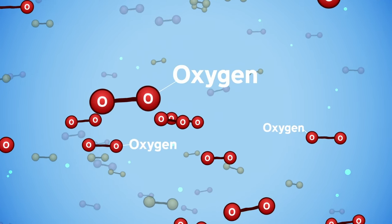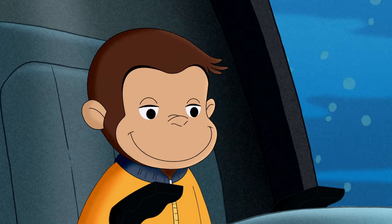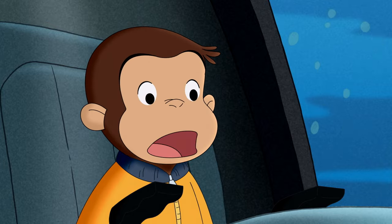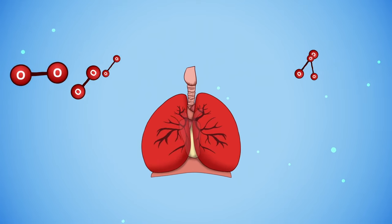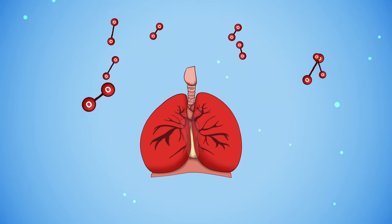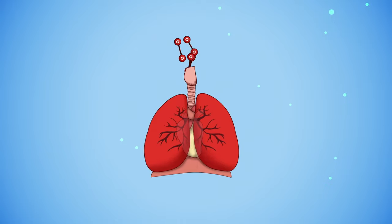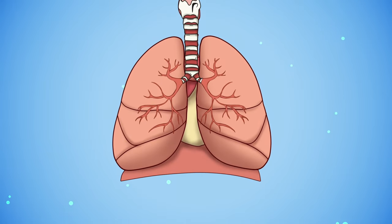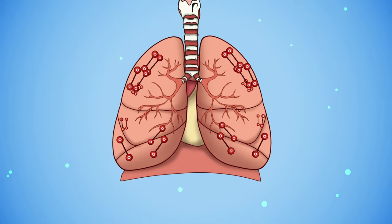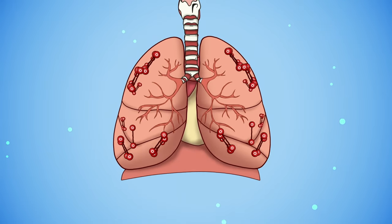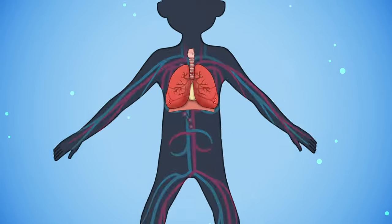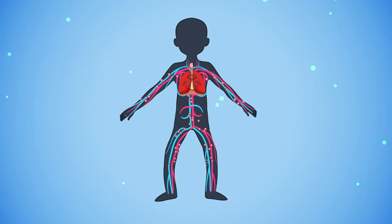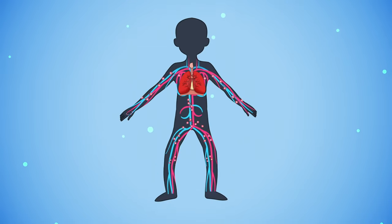When a human or monkey breathes in, all the air goes into our lungs. Then our lungs absorb the oxygen molecules in the air. Next, the oxygen goes from our lungs into our blood, so it can flow around our whole body.